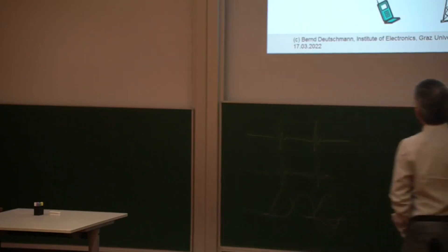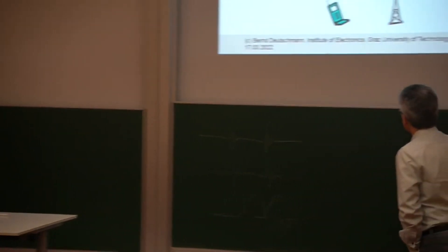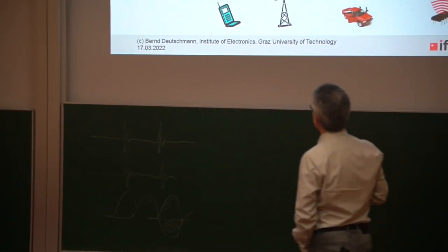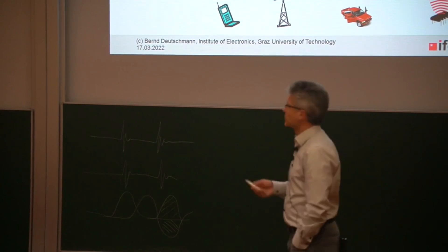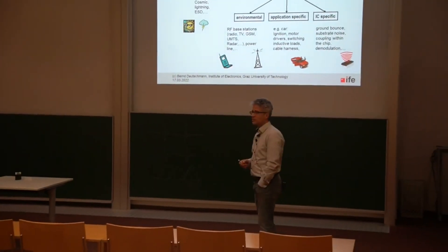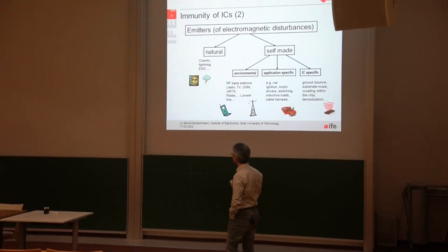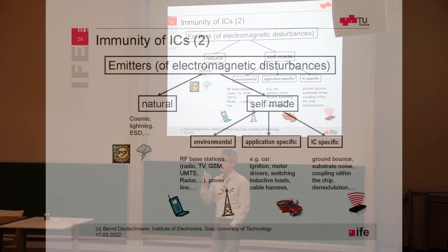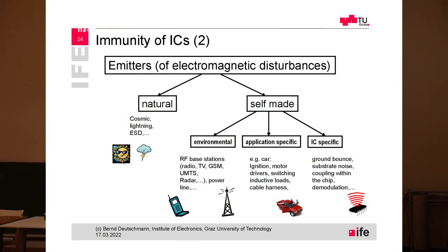So let's also mention what are the sources of electromagnetic disturbances. There are many, many sources. We have natural sources like cosmic radiation, electrostatic discharges from lightning strikes. They are there, they were there, and they will be there. But more and more we have the so-called self-made sources.